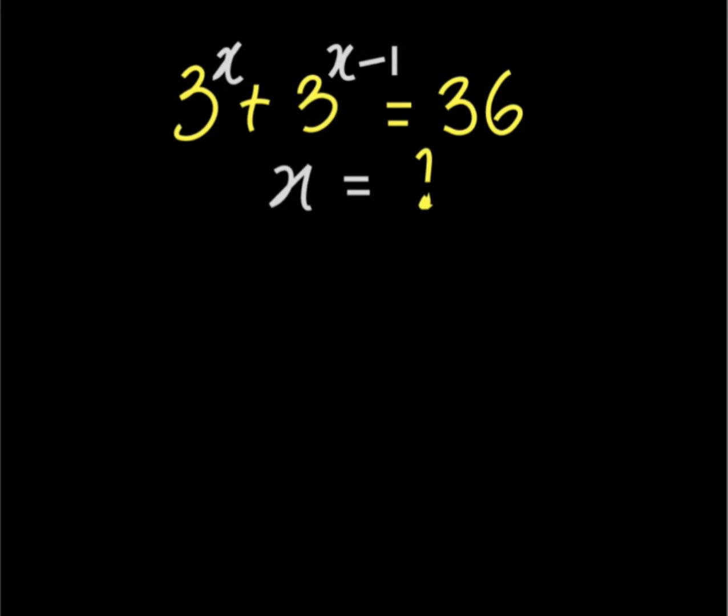Hello everyone, this is Esomhoff Online Maths, and in this video we shall solve this equation. It says that 3 to the power of x plus 3 to the power of x minus 1 is equal to 36.